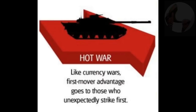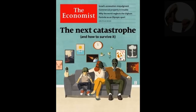Well, the final stage is hot war. Like currency wars, first-mover advantage goes to those who unexpectedly strike first. On the Economist magazine covers they've been telegraphing all these events: volcanic eruptions, the reference to swine flu, the earth getting hotter and the ice caps melting, a foreign body approaching the earth, bird losses, and the increase in pestilences.